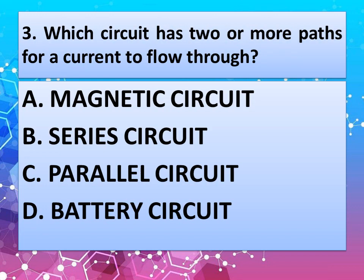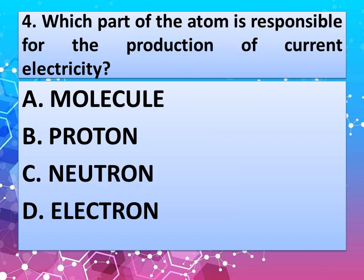Which circuit has two or more paths for a current to flow through? And the correct answer is option C, parallel circuit.